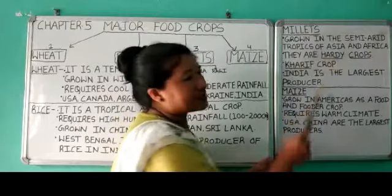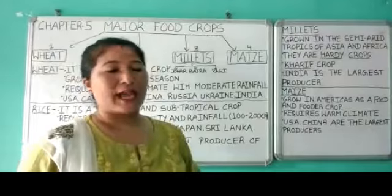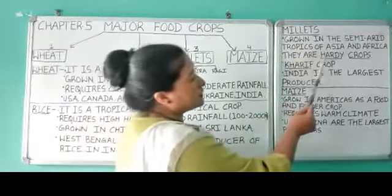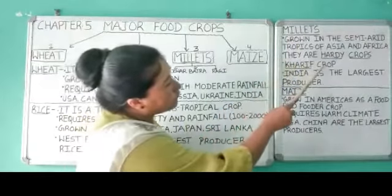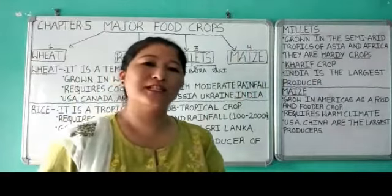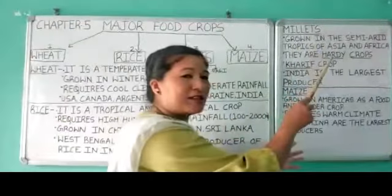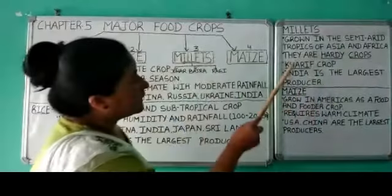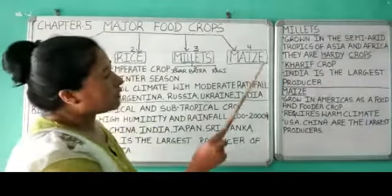Millets are known as hardy crops — they can survive in regions receiving very less rainfall and can even grow in infertile soil. They are a summer crop, meaning they are grown during the summer season, but can grow where rainfall is less. India is the largest producer of millets.